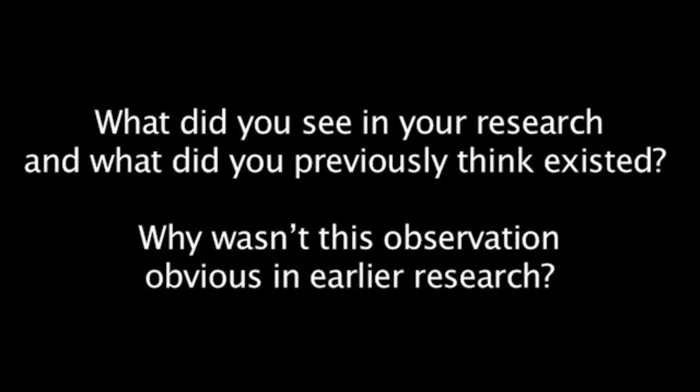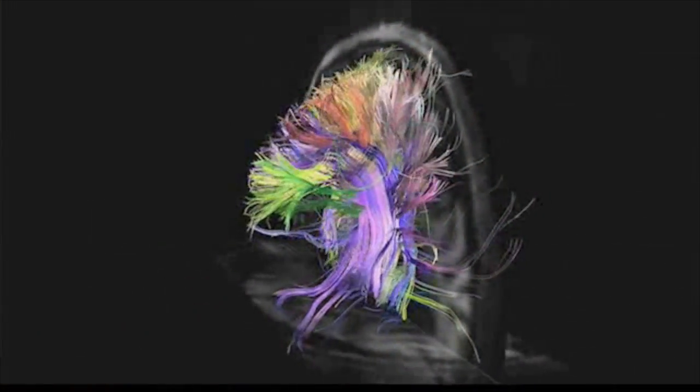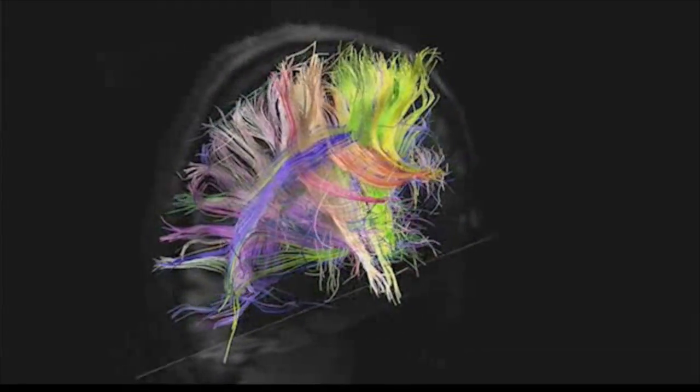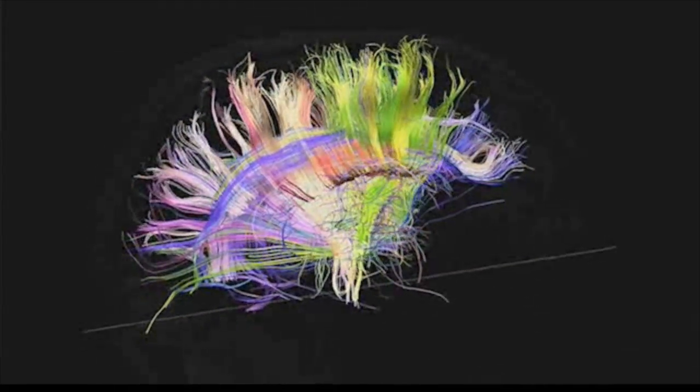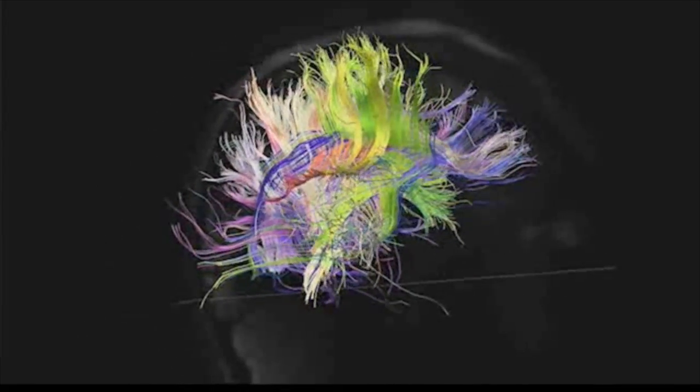Moreover, this structure was actually part of a three-dimensional stack, and this three-dimensional stack covered the entire brain. So the conclusion was that the entire volume of connections of the brain conformed to this extremely simple three-dimensional structure — a single woven grid with fibers in only three axes. The reason that structure was not very obvious earlier was that it's highly curved, so this whole grid structure is bent by the growth and shape changes of the brain, and because it's so bent, it takes a little bit of doing to recognize it for what it is.